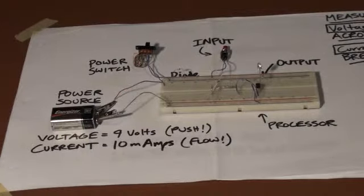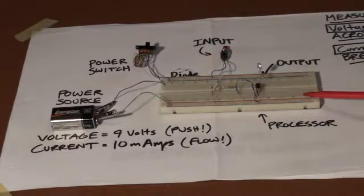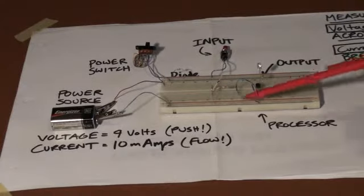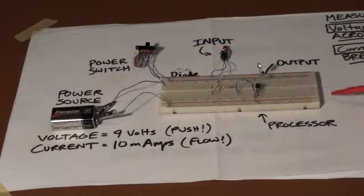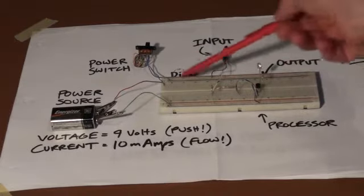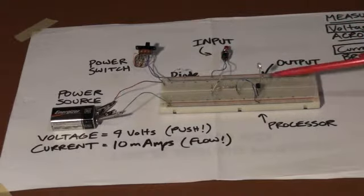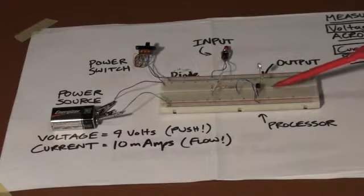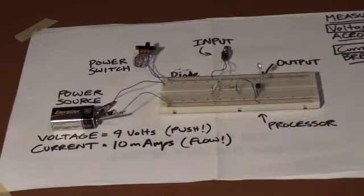This year we used a breadboard to do circuits. Breadboards we found out through our investigation along the bottom and the top are all connected in rows, and then in the two middle sections here, they're connected in columns of five holes. That's how we connect them together.